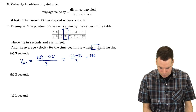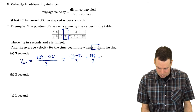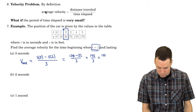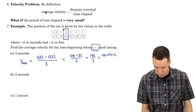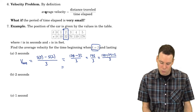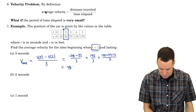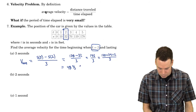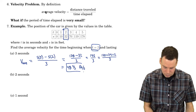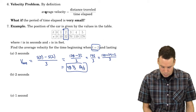That's 146 over 3, which simplifies to 48 and 2 thirds feet per second. So the average velocity starting at time 2 over the next 3 seconds was 48 and 2 thirds feet per second.